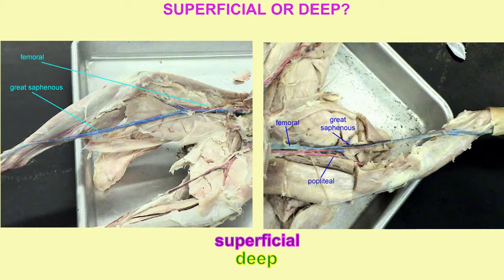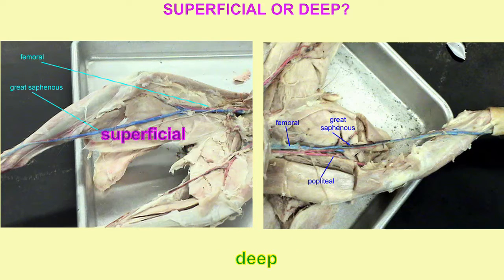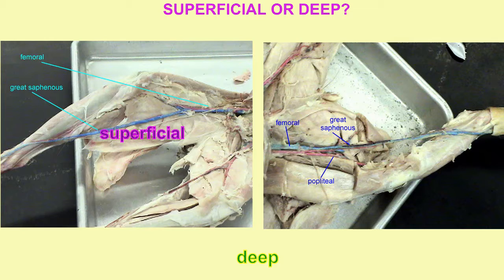When one considers these veins, the great saphenous vein is superficial, being just underneath the skin, while the femoral vein becomes the popliteal vein, which becomes the tibial vein — it's much deeper.